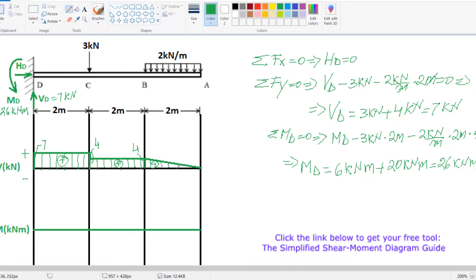In order to draw our moment diagram we have to calculate these areas. Here we have 7 times 2, which is 14. In this case 4 times 2 is 8. And here 4 times 2 divided by 2 is 4.